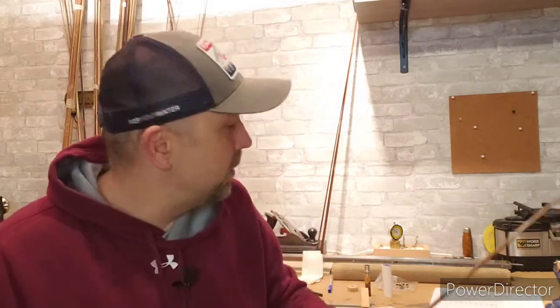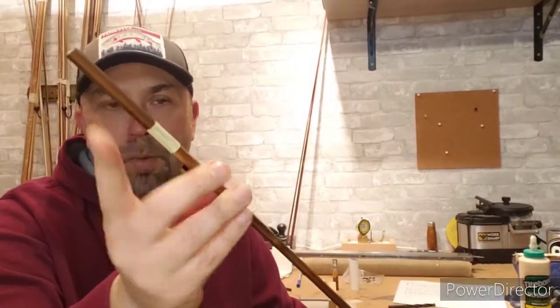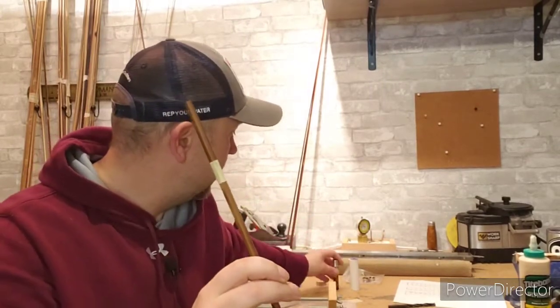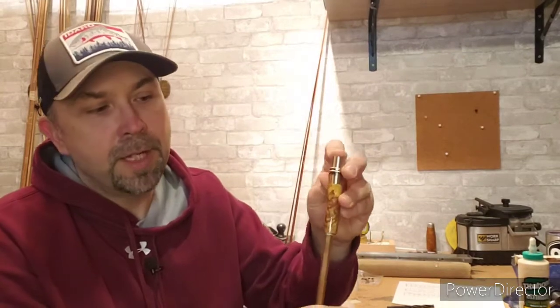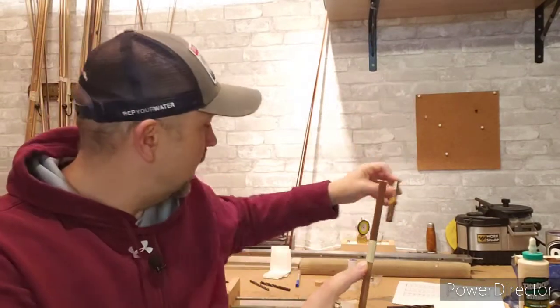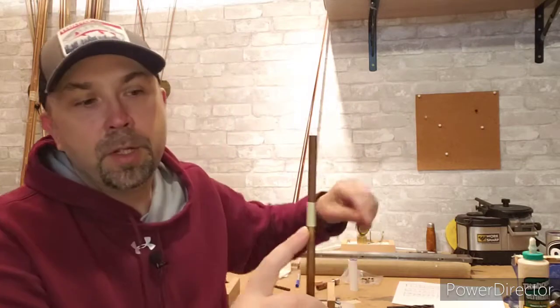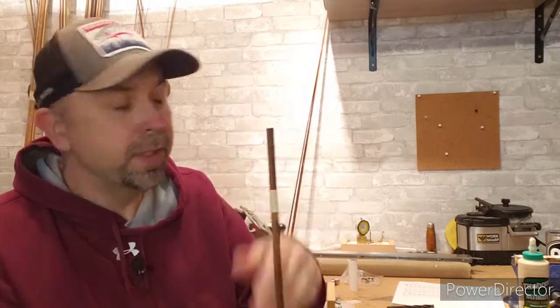Other things I like to prep is the reel seat. You're going to want to mark on your blank the distance of your reel seat. Once you have your reel seat you can just slide it on and give yourself a little tape reference mark, basically allowing you to know that you don't want any cork down below that or above it.